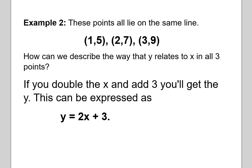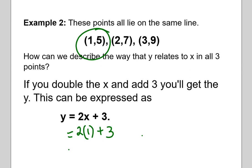Y is always equal to 2 times the X value plus 3. If you try that with any of these pairs, you'll see that it works. So if we start with the coordinates 1 comma 5 and put in 1 for X in this equation, you'll see that if you simplify, you'll get 5 for Y.